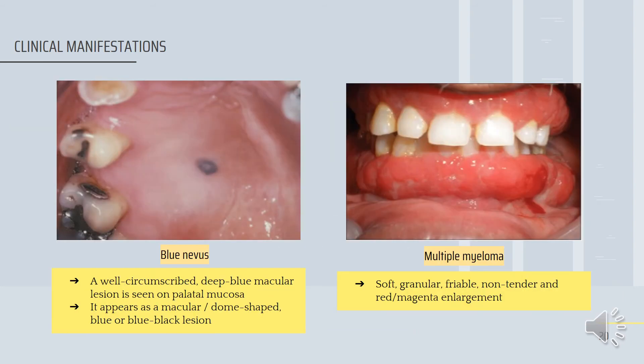Lastly, blue nevus and multiple myeloma. For blue nevus, a well-circumscribed, deep blue macular lesion is seen on the palatal mucosa. For multiple myeloma, it presents as soft, granular, friable, non-tender, red or magenta enlargement of the gingiva.